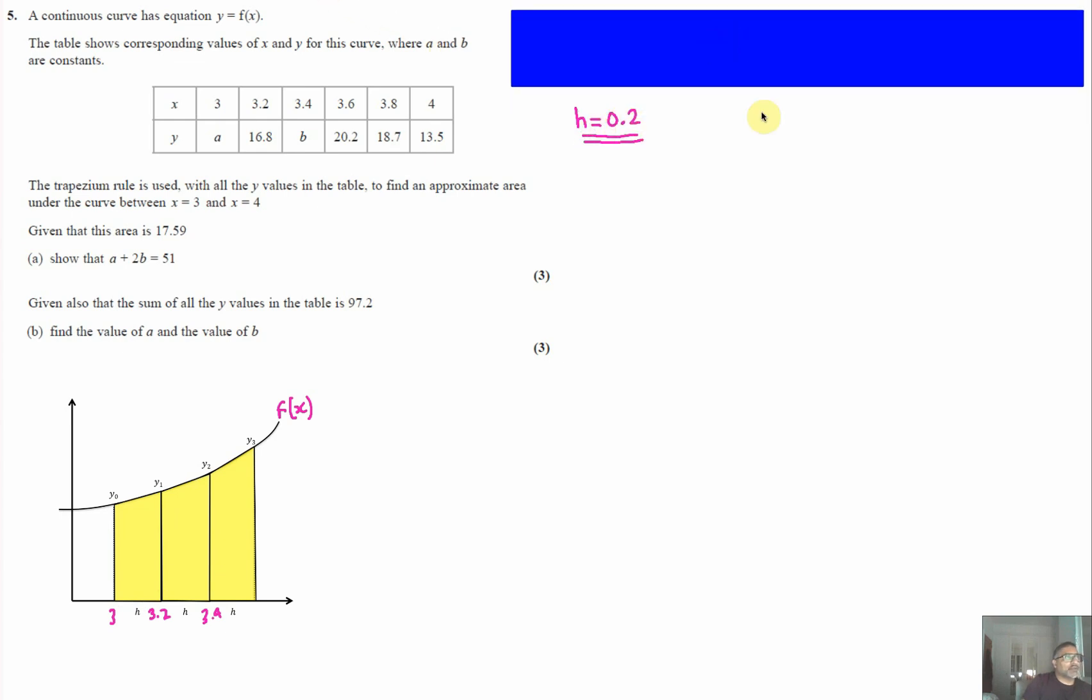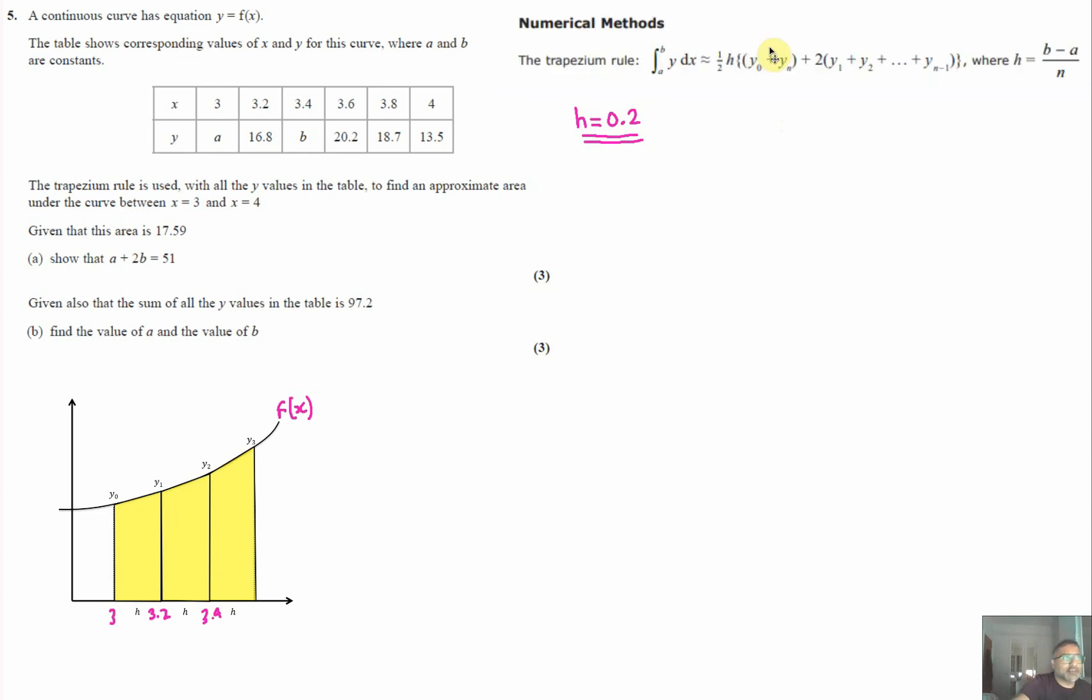The formula booklet provides the trapezium rule formula, so you don't need to memorize it, but you do need to know how to use it and identify h. Personally, I wouldn't use the formula for h; it's better to work it out directly from the table.